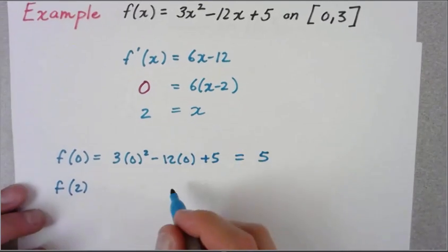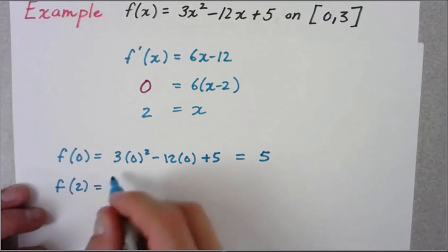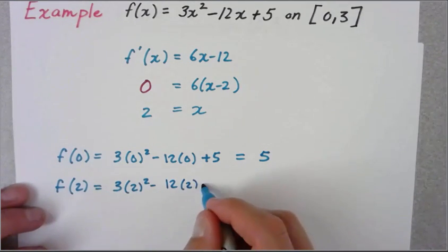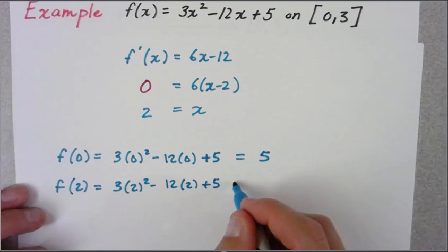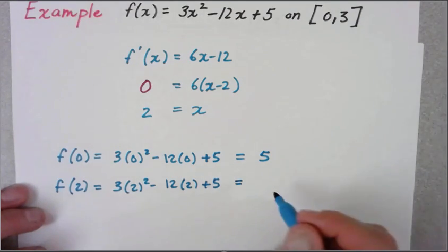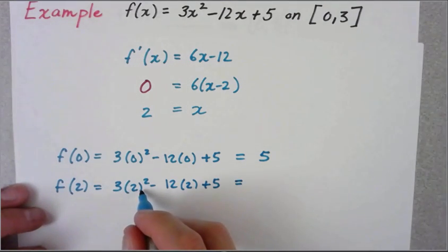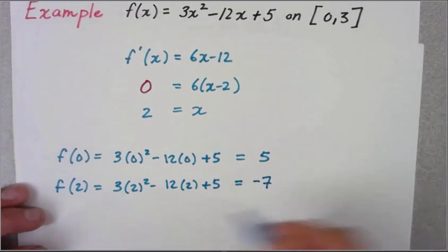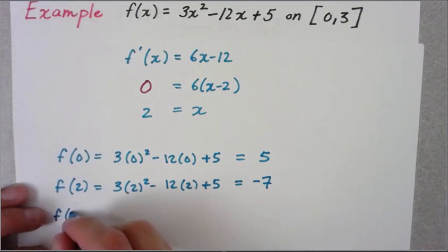Now f(2) - this was my critical value. I'm going to plug in 3 times 2² - 12 times 2 + 5. It looks like I get 12 - 24 + 5, which is -7.